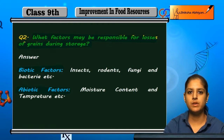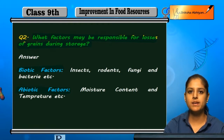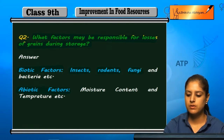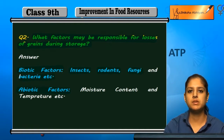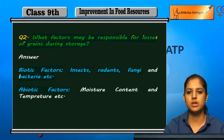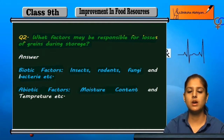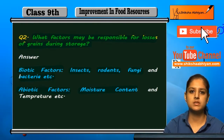Biotic means living and abiotic means non-living. Biotic factors can be insects, rodents, fungi, and bacteria, because these cause the grains to deteriorate or be lost. Abiotic factors can be moisture content — if the moisture content is too high, then the grains are damaged.